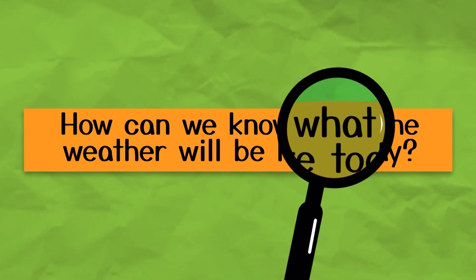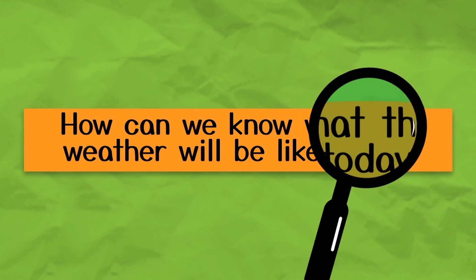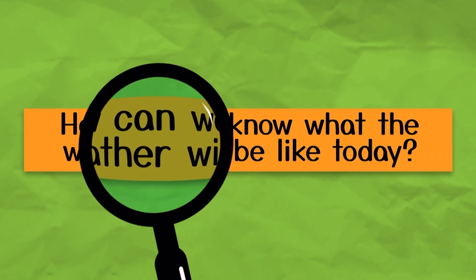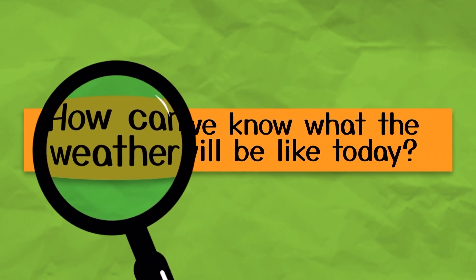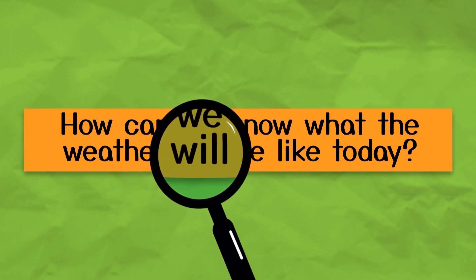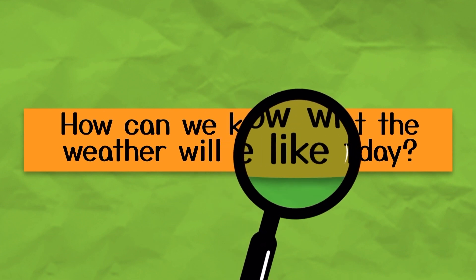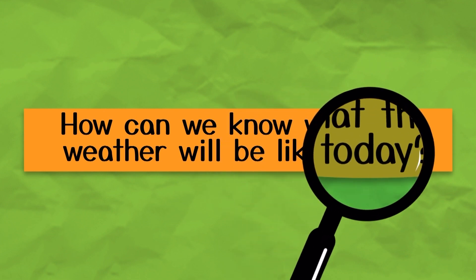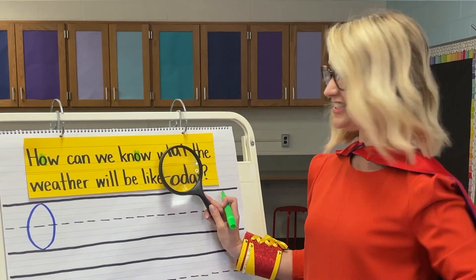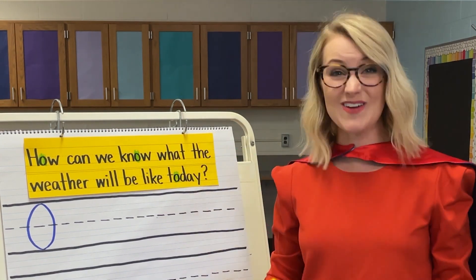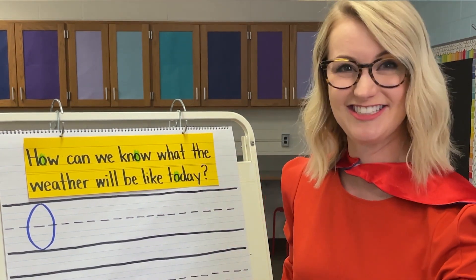Our next word is what. Do you see O in the word what? Nope. Our next word is the word the. Do you see an O? Nope. Our next word is weather — no O. Will — no O. Be. Like. Today — do you see an O in the word today? Yes, very good. We see another lowercase O. Great work finding the letter O in our question today. We'll be answering that one later.